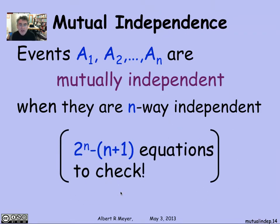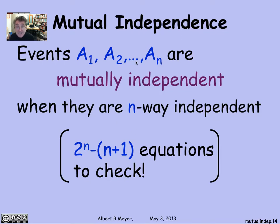Checking that n events are mutually independent means checking all intersections equaling the products of the individual probabilities. There are 2^n possible subsets of A1 through An, and you must check each one. You don't need to check the empty set or singleton sets, so you have to verify 2^n − (n+1) equations. In general, it's not easy to verify mutual independence by direct calculation — you usually arrive at it by assumption.